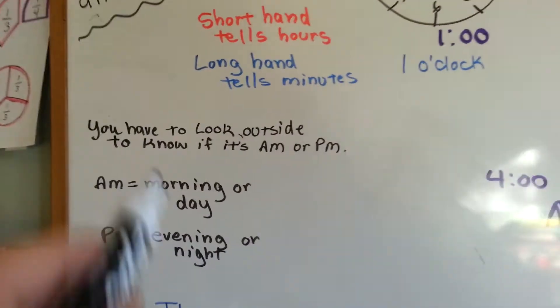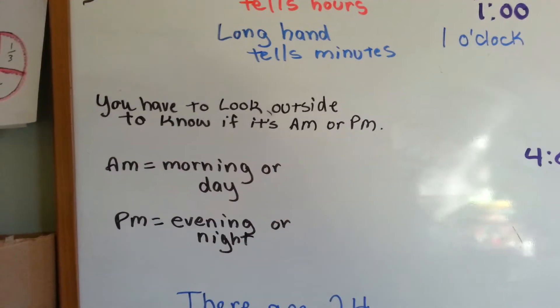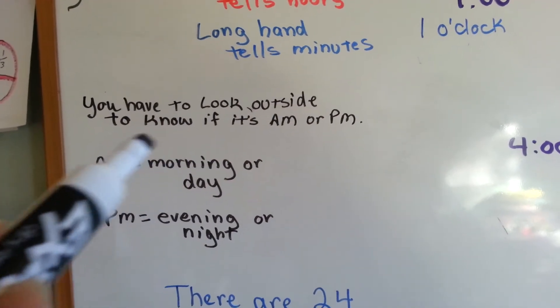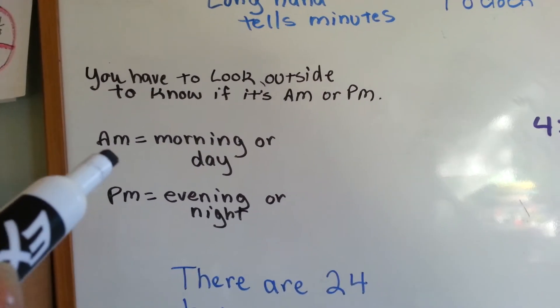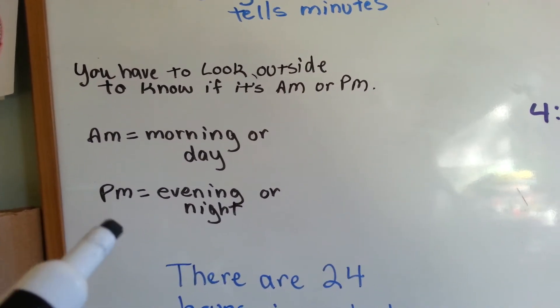The only way to know if it's midnight or lunchtime is to look outside your window and see if it's a.m. or p.m. A.m. is the morning or day, and p.m. is evening or night.